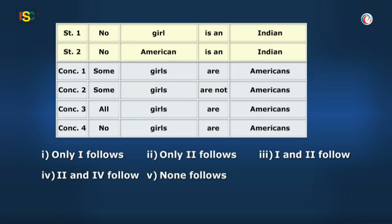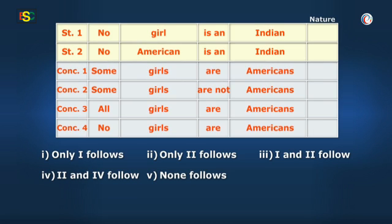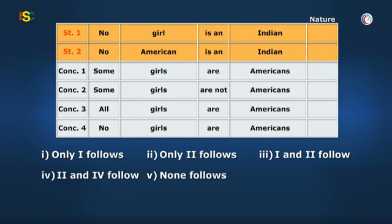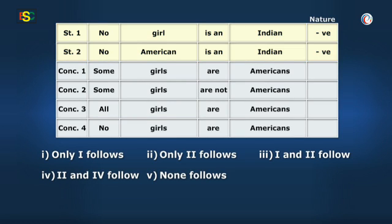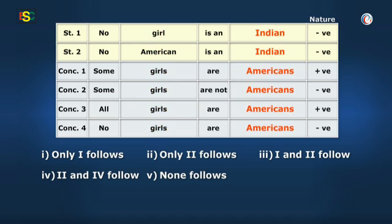Okay sir, I'll check each statement one by one. Before that, I'll write the nature of all statements and conclusions. Both statements are negative in nature, then conclusion one and three are positive whereas two and four are negative. Then I'll give percentages to all subjects and predicates in the given statements and conclusions.